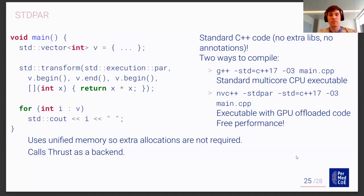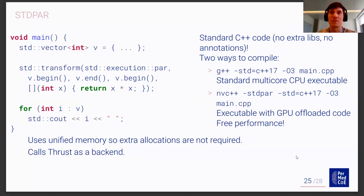How NVC++ STDPAR works: it uses unified memory, so you don't need to care about GPU memory allocations. Under the hood, it calls the Thrust library — not very unexpected. So the chain is STDPAR → Thrust → CUB (the lower-level backend).